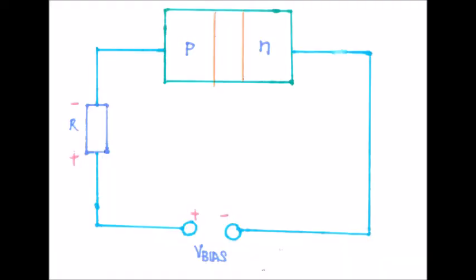The bias voltage supplies energy to the free electrons in order for them to move to the P-region. Electrons that reach the P-region will then lose energy and combine with the holes in the valence band. Electrons in the P-region are then attracted towards the positive side of the bias voltage. The holes in the P-region transport electrons in order for them to move through the P-region. This is known as hole current.